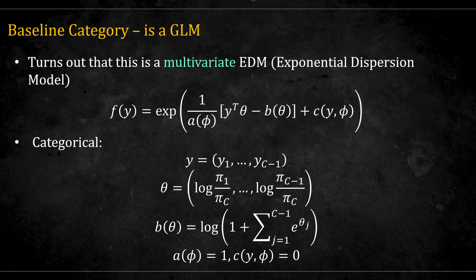It turns out that this is also a GLM. We can put this in exponential family form, or more accurately in EDM form — exponential dispersion model — which is a subgroup of the exponential family that can be analyzed using GLMs. The form is now for multivariate distributions, so y is a vector and theta is also a vector. This is the EDM form discussed in the GLM videos. If we are able to put the distribution in this form, then we can analyze it using GLMs.